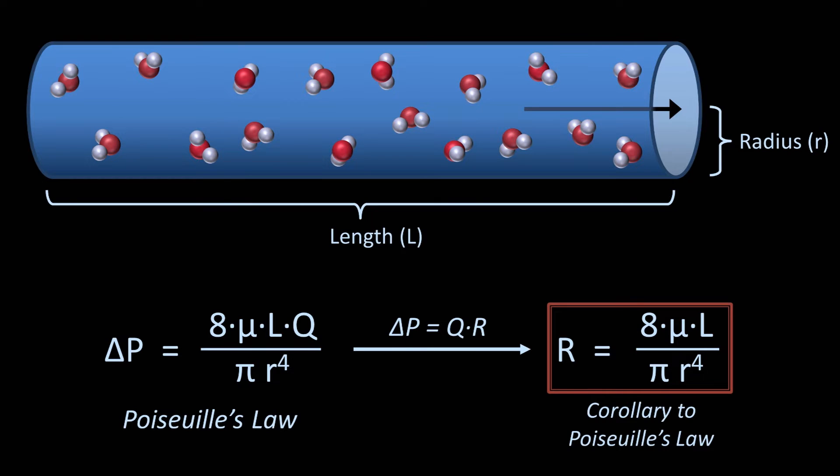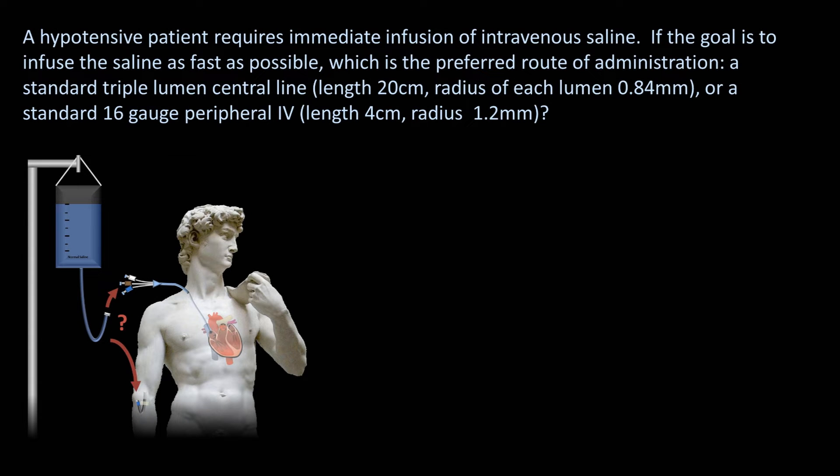Let's take a look at some common medical applications of this. A hypotensive patient requires immediate infusion of intravenous saline. If the goal is to infuse the saline as fast as possible, which is the preferred route of administration? A standard triple-lumen central line, whose length is 20 centimeters and the radius of each lumen is 0.84 millimeters? Or a standard 16 gauge peripheral IV, whose length is 4 centimeters, and the radius of which is 1.2 millimeters?